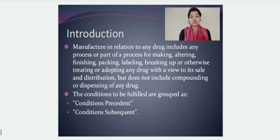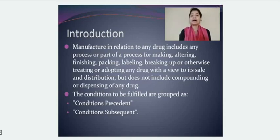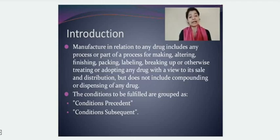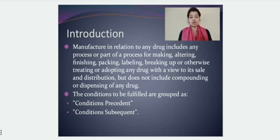There are certain conditions that are to be fulfilled to get a license for manufacture. Those conditions can be divided into two groups: conditions precedent and conditions subsequent. Conditions precedent are the conditions required before a license has been granted, while conditions subsequent are the conditions you have to fulfill once the license has been given and the manufacturing process is to start.